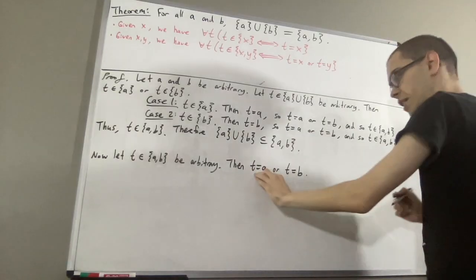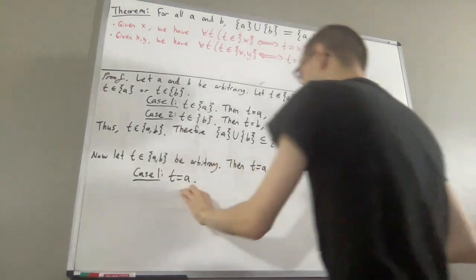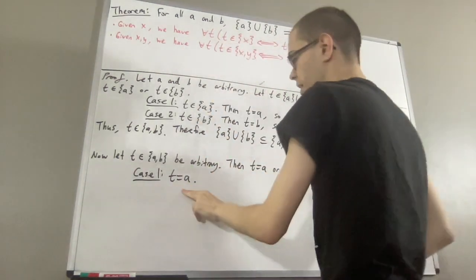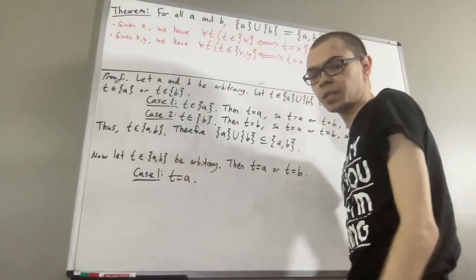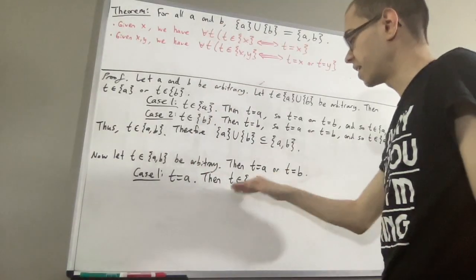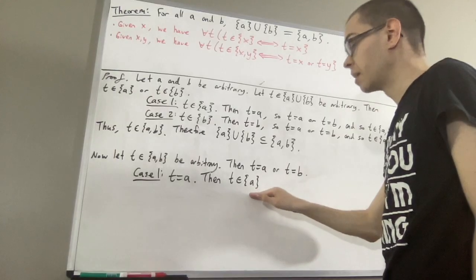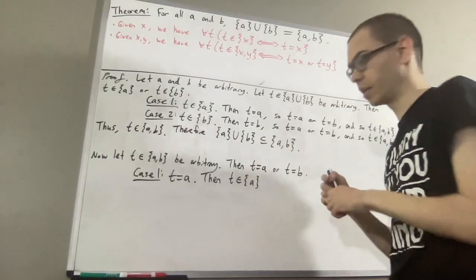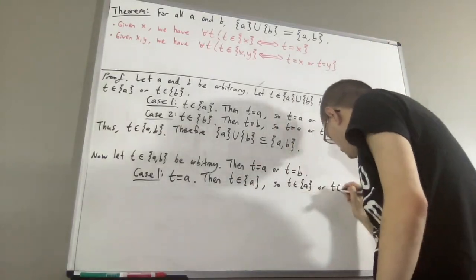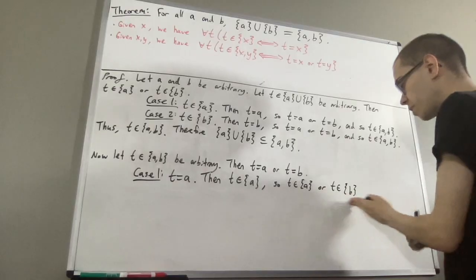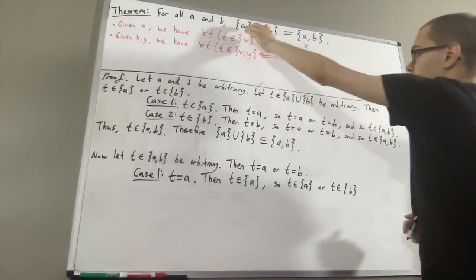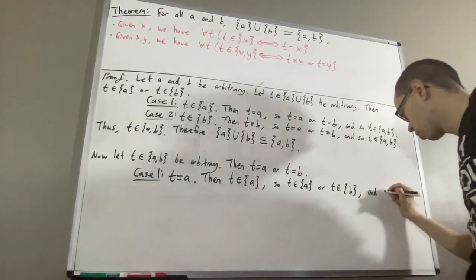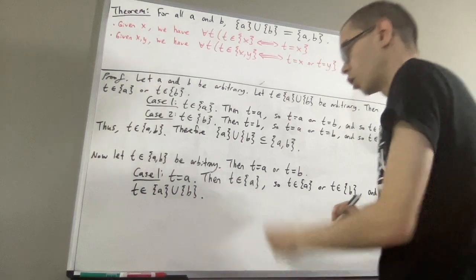Let's start with case one, where T is equal to A. If T is equal to A, well then by the property of singleton sets, this tells us that T is an element of the singleton set of A. Now since T is an element of the singleton set of A, that tells us T is an element of the singleton set of A or T is an element of the singleton set of B. But then, this is precisely what it means for T to be an element of the union of the singleton set of A and the singleton set of B. And so we're done — this completes case one.